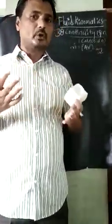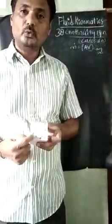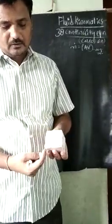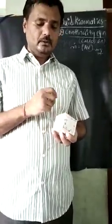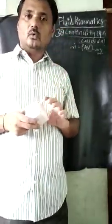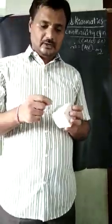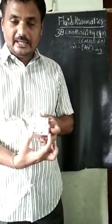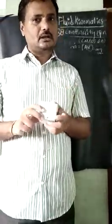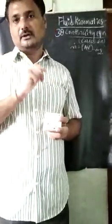Using our usual notations: along the X-axis the velocity is u, along the Y-axis the velocity is v, and along the Z-axis the velocity is w. To derive the three-dimensional continuity equation, we assume an infinitesimally small cubical fluid element with dimensions dx along the X-axis, dy along the Y-axis, and dz along the Z-axis. This gives a volume of dx·dy·dz.